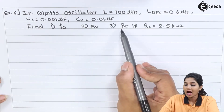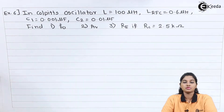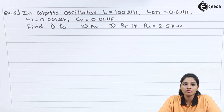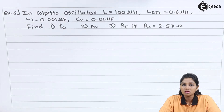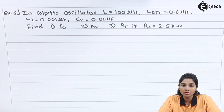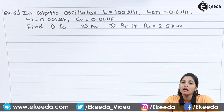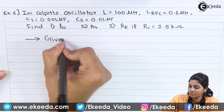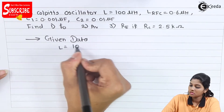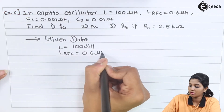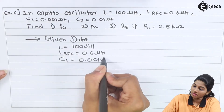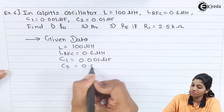Find: frequency of oscillation f0, gain Av that must be satisfied by the circuit, and Re if Rc = 2.5 kΩ. In this problem the value of radio frequency choke coil is given along with the inductor and capacitors. We write down the given data: L = 100 µH, L_RFC = 0.6 µH, C1 = 0.001 µF, C2 = 0.01 µF.